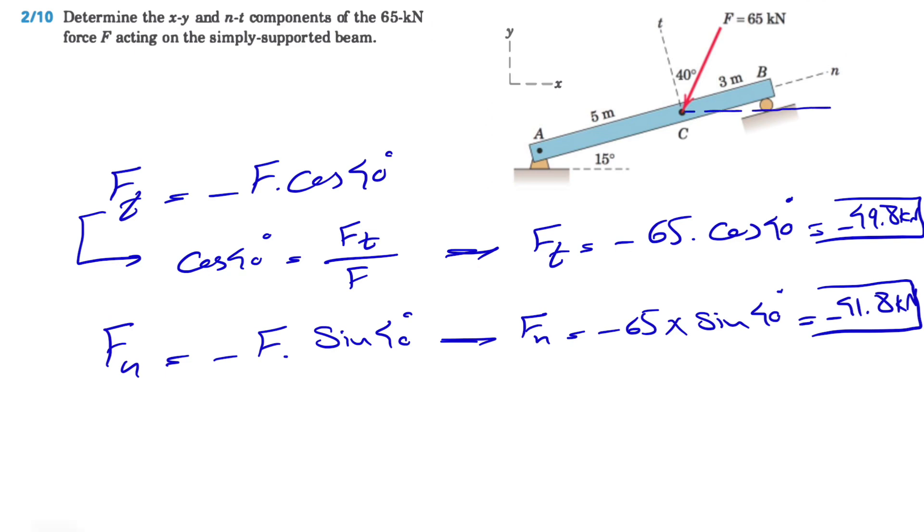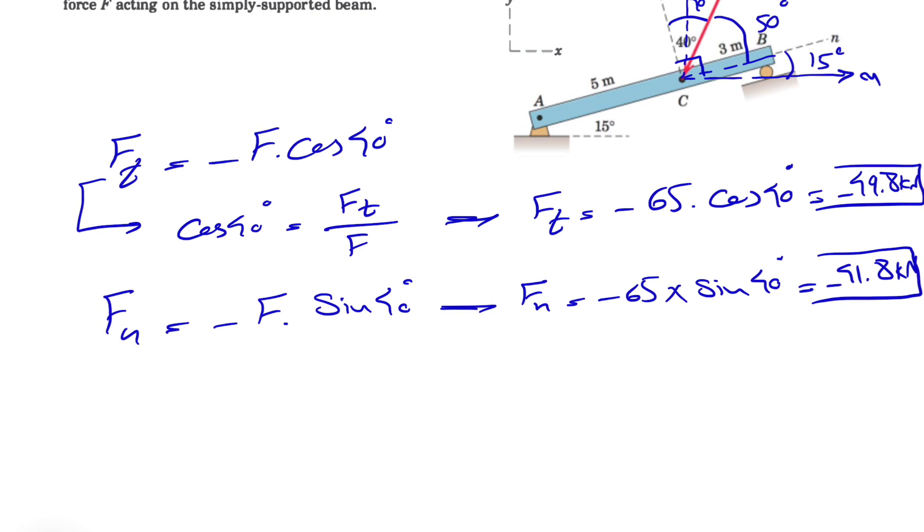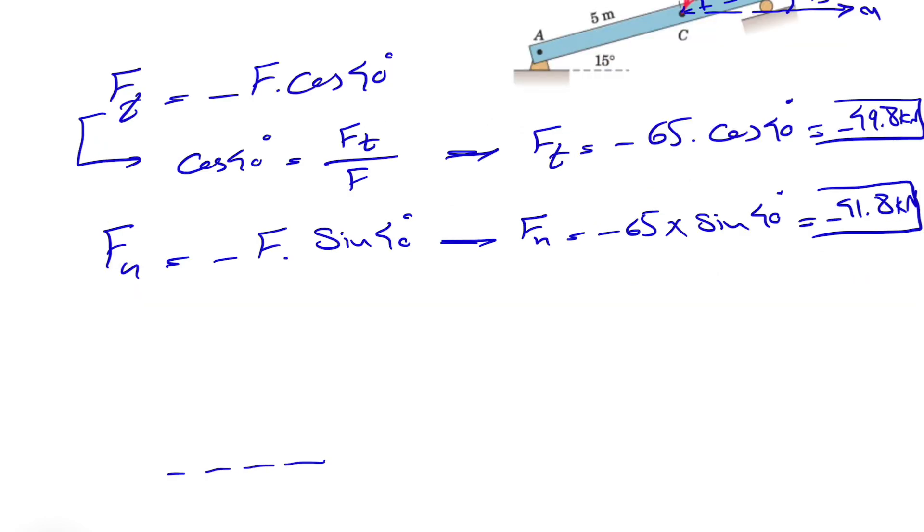If we want to find the x and y component, we know this will be our x-axis and this is our y-axis. We know this angle is 40 degrees, and since n and t are perpendicular to each other, this angle will be 90 degrees. If this side is 40 degrees, this angle over here will be 50 degrees. We know this part is 15 degrees.